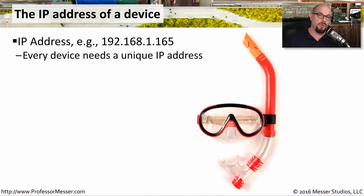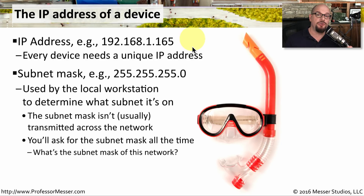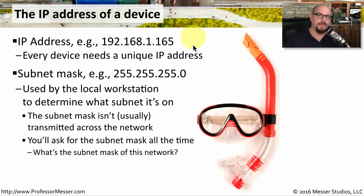These days, TCP/IP is the protocol of choice on our networks, which means all of the devices on your network will be assigned a unique IP address. 192.168.1.165 is just one example. The IP address is usually combined with a subnet mask. The subnet mask is not usually transmitted across the network — it's used on the local workstation. If you've been tasked with configuring an IP address, it's common to ask for the IP address and the subnet mask associated with it.